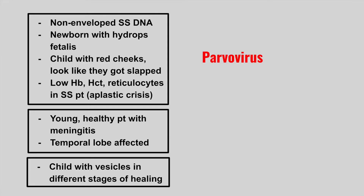This is parvovirus B19. The next patient is going to be young and healthy with meningitis, and this is going to affect the temporal lobes. This is herpes. Look out for a picture of the brain that shows the temporal lobe affected.